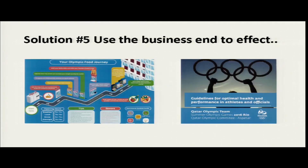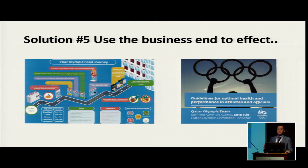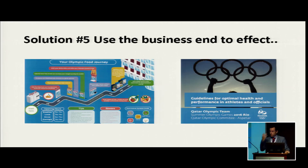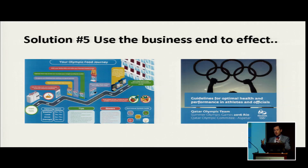Another example is what we call using the business end to promote good messages. This is a booklet we did for our Qatari athletes together with Dr. Quan Alonso. In there is a simple map for sports nutrition to promote positive messages around the Olympic village, and one of them included making sure that athletes brush their teeth and use their mouthwashes regularly across the course of the day. By using that to push positive messages, we start to get a behavior change that could make oral health better for our athletes.